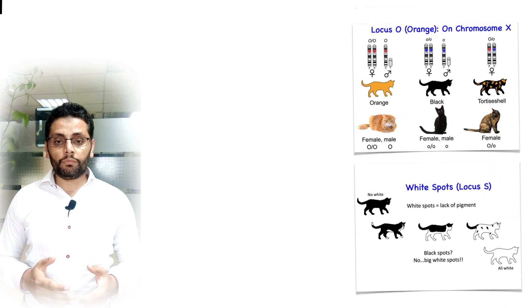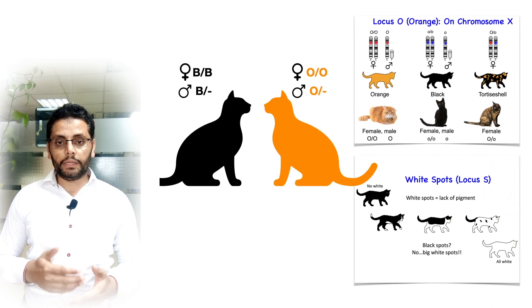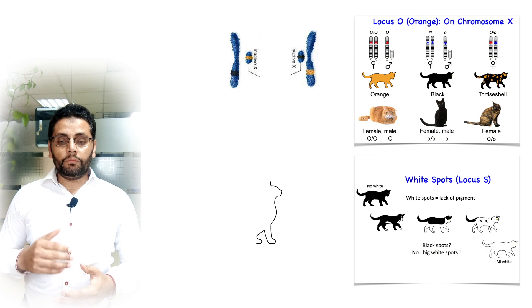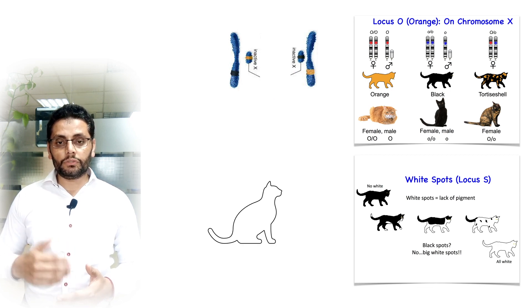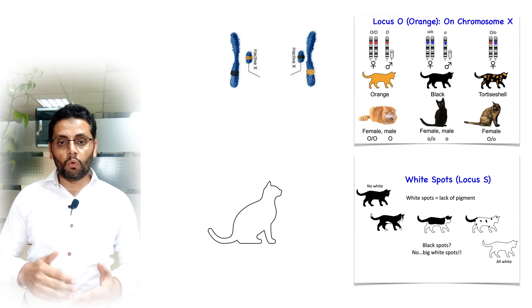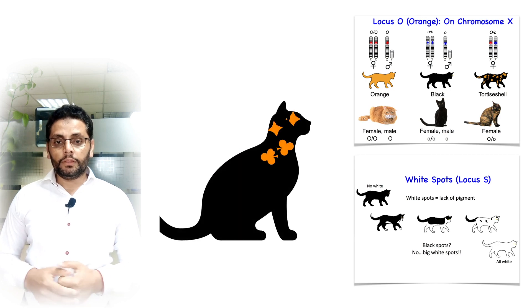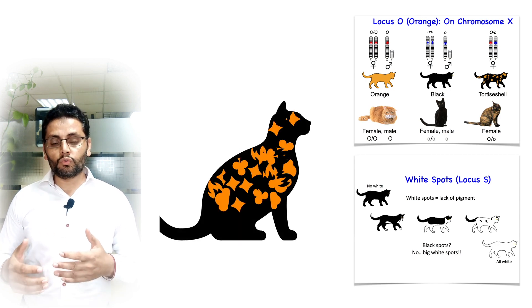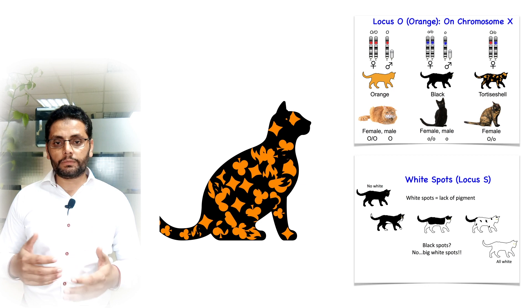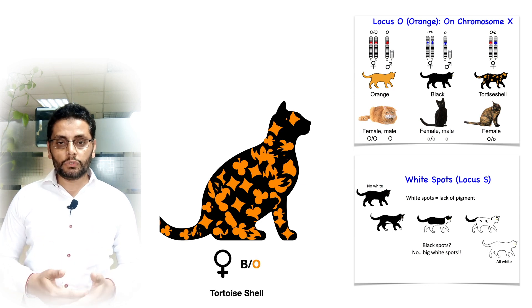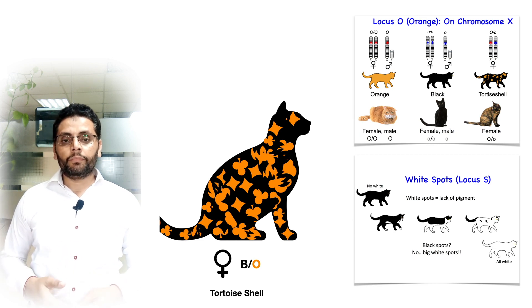The effect of white spotting locus is to slow migration of melanocytes. The white fur patches result when melanocytes fail to reach the epidermis. The slower the migration, the more extensive are the white fur patches. The combination of expression of these two alleles produces a gradient of coat color between a bicolor tortoiseshell to a tricolor calico.